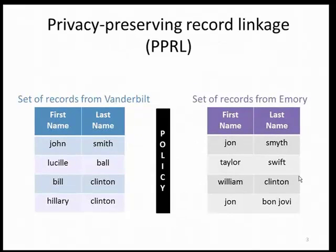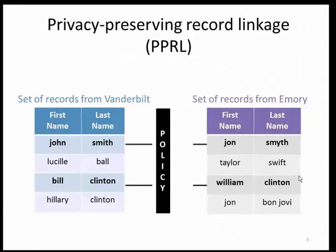Now I'll define privacy-preserving record linkage. This is a variant of the task where you have records at two different institutions and you'd like to identify records referring to the same individual, however something such as a policy prevents you from sharing all of your information. An example is the HIPAA policy in the U.S., which prevents healthcare providers from revealing patient records. The task here is still to identify records that refer to the same individual but without revealing that individual's identity or compromising their privacy.